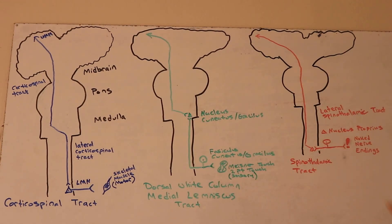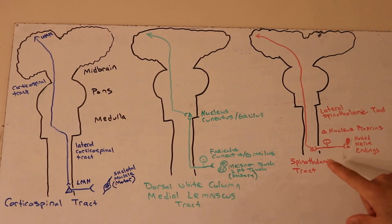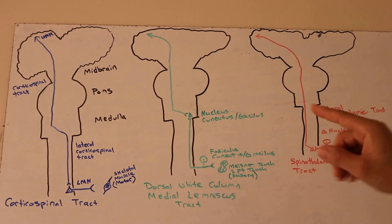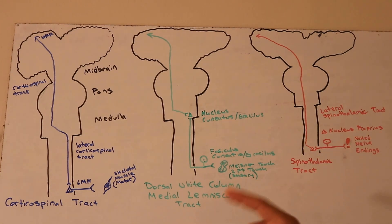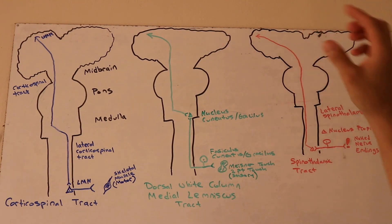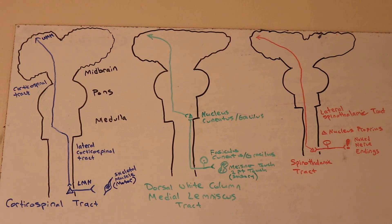You have naked nerve endings that sense pain, temperature, and crude touch. Before crossing, the naked nerve ending communicates with the nucleus proprius, which is inside the spinal cord. Once it communicates with the nucleus proprius, it decussates — crosses over — at the anterior white commissure, located in the anterior portion of the spinal cord. It then travels all the way up the lateral spinothalamic tract to the thalamus for crude communication of temperature and pain, and then specifically to the cortex for fine pain discrimination — such as whether it's sharp pain, dull pain, or other specific qualities.